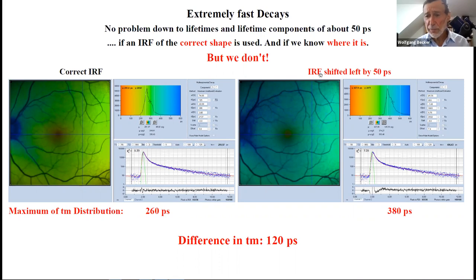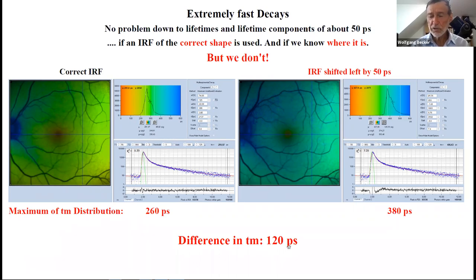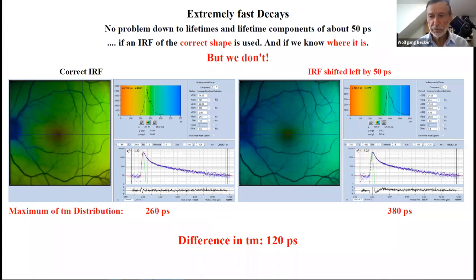If you deliberately shift the IRF by only 50 picoseconds to the left, the lifetime distribution shifts to 380 picoseconds—a difference of 120 picoseconds in tau M from only a 50 picosecond IRF shift. We need a solution for that.